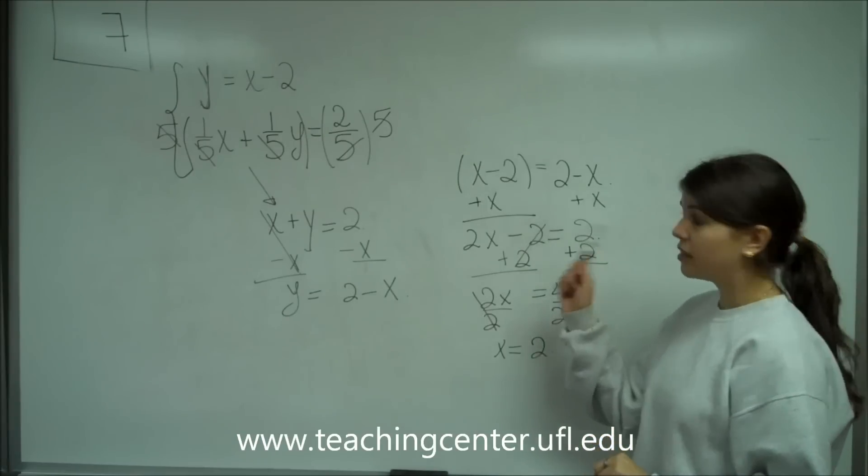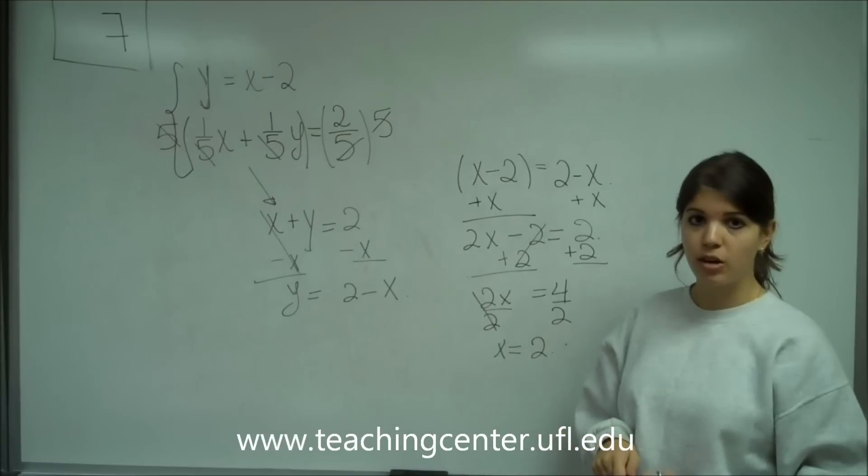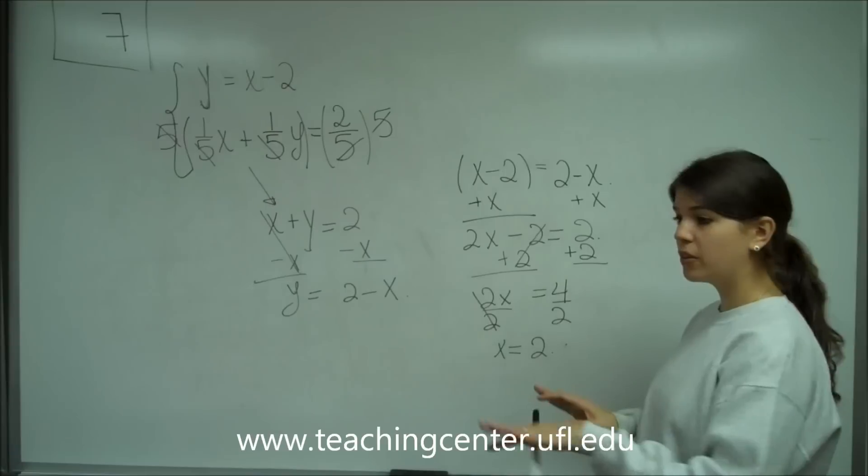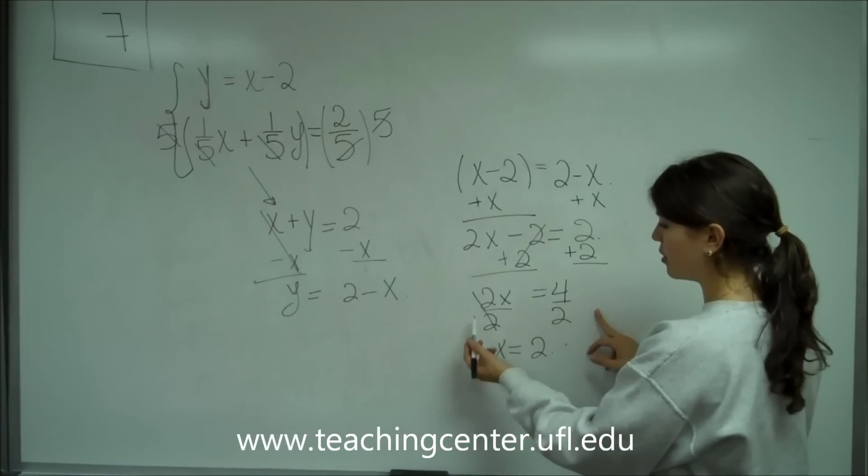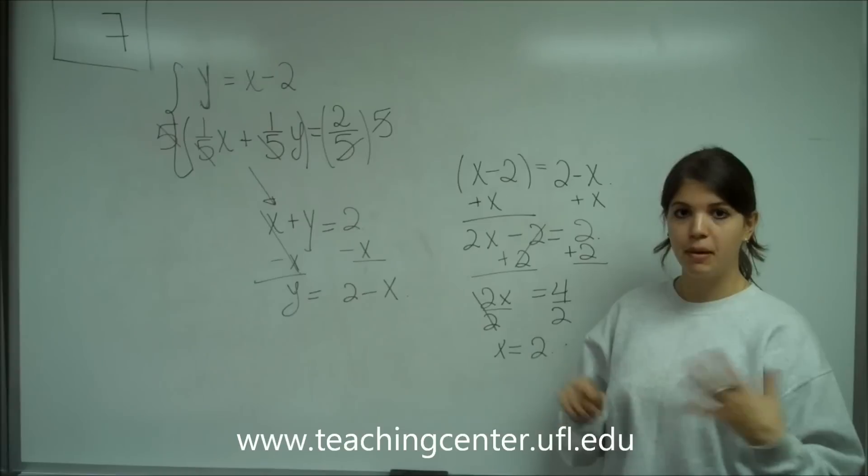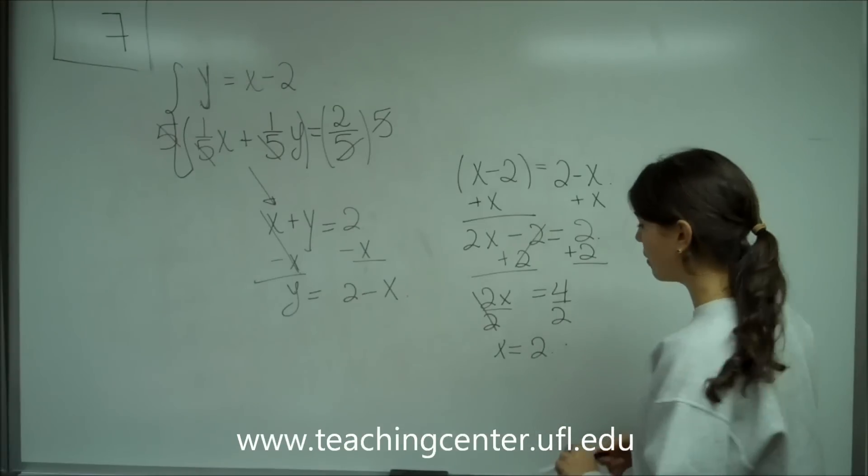you don't want to divide yet. As long as you can add and subtract like I did here, then you want to add and subtract. And you can no longer add and subtract like over here. You have 2x equals 4. That's when you divide. But try not to divide anything by x and cancel that.